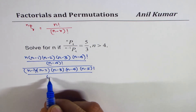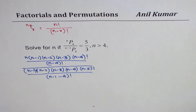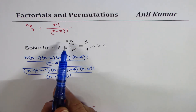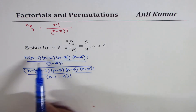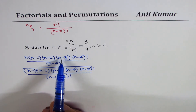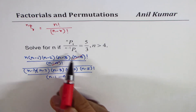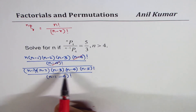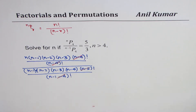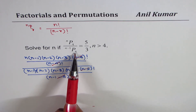What we have in the denominator is (n minus 1 minus 4) factorial, i.e., (n minus 5) factorial. For nP4 we have four terms — 1, 2, 3, 4 — and the fifth gets cancelled. Here also we are talking about four terms; the fifth gets cancelled. In all, you will always have the same number of factors as the r value.